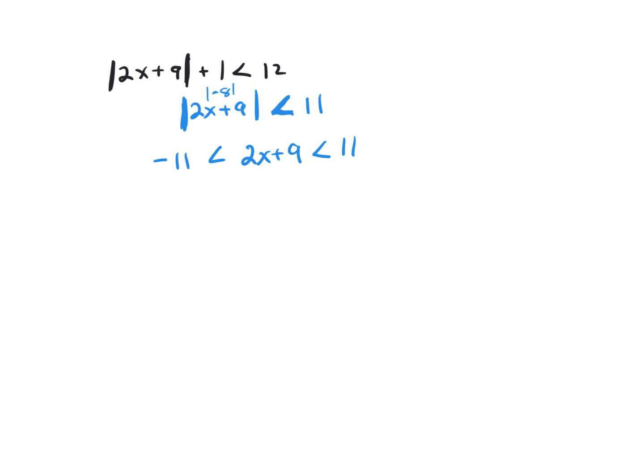So the moral of the story is whenever you have an absolute value less than, you always form a compound inequality that looks like that. And now let's just get x in the middle. So let's subtract 9 from both sides, and that would be negative 20 less than 2x less than 2.